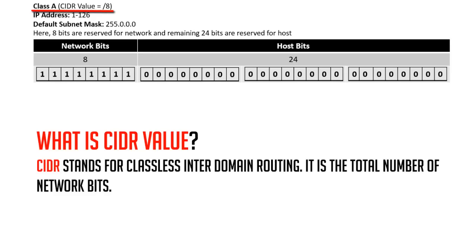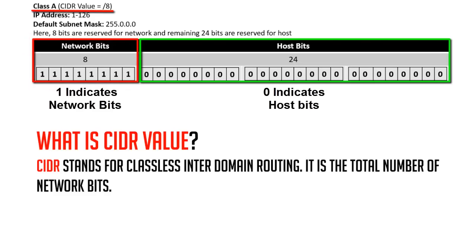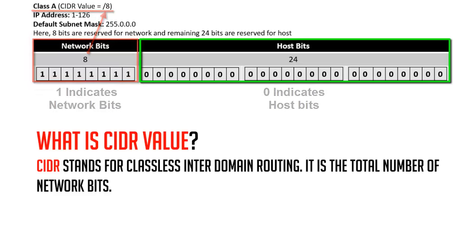In a Class A IP address there are 8 bits reserved for the network and the remaining bits are reserved for the host. So these 8 network bits represent the CIDR value. That's why the default CIDR value of a Class A IP address is 8.